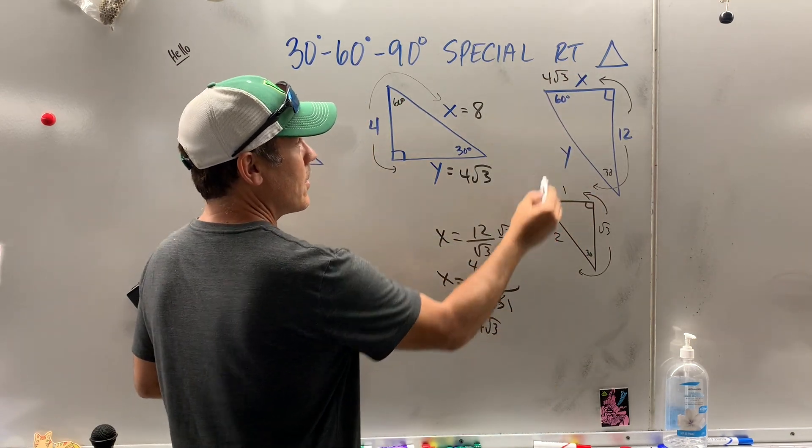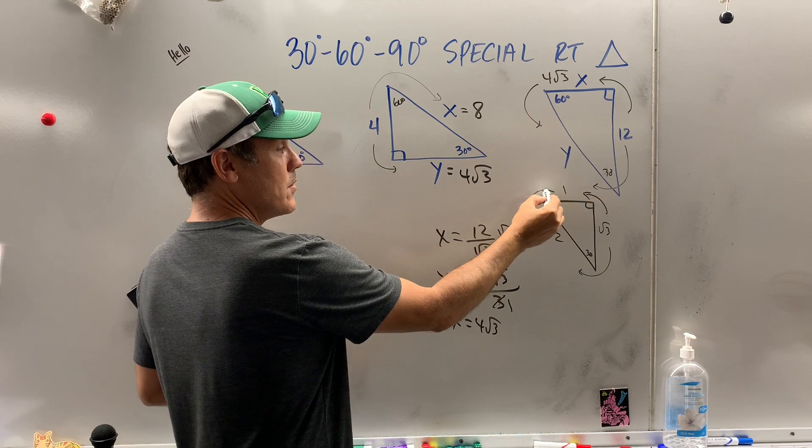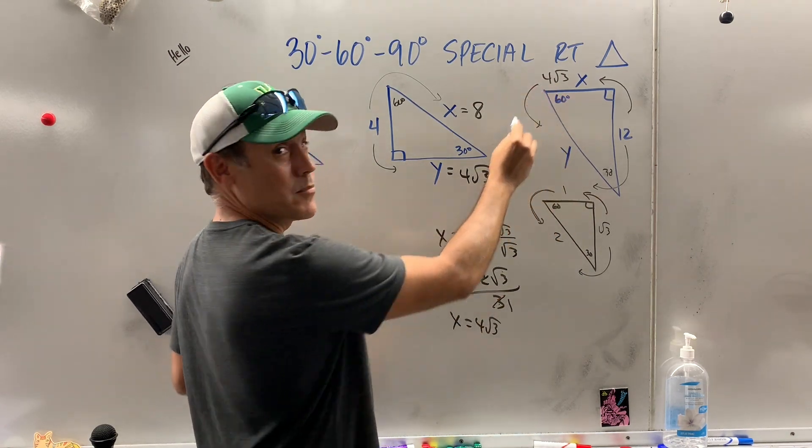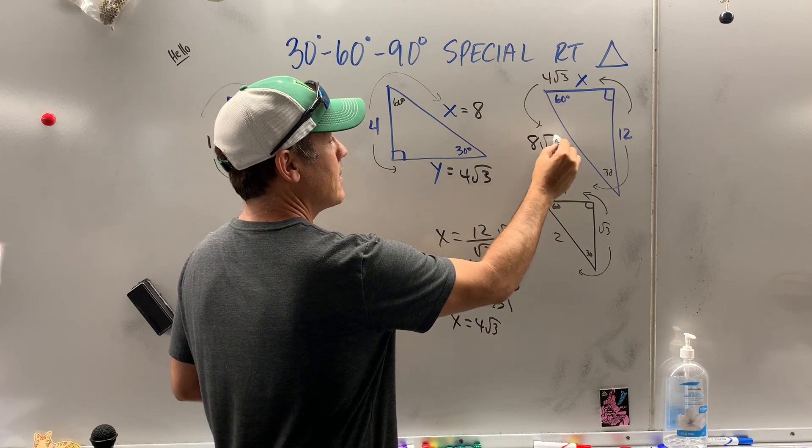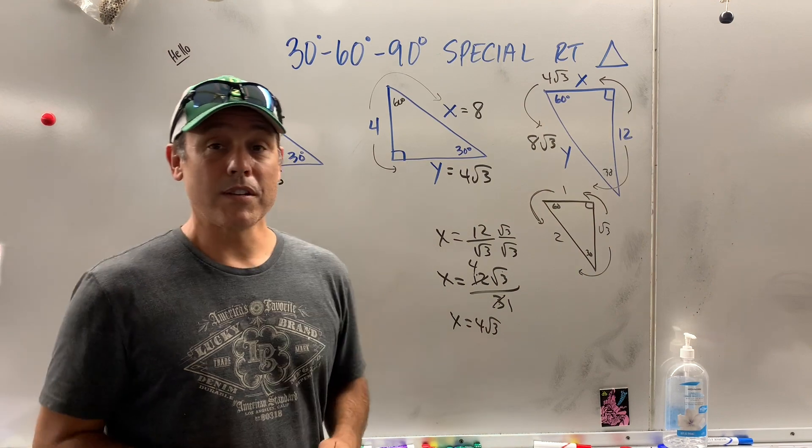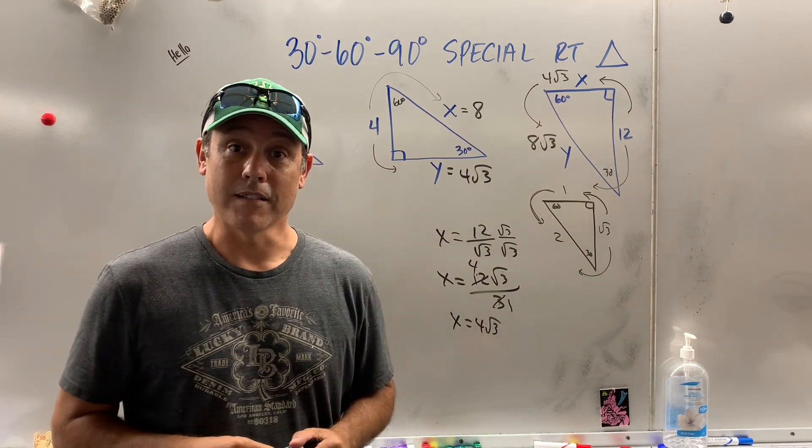4 radical 3. Now, we can go here. All you do is multiply by 2. So, y would be equal to... What is 2 times 4 radical 3? 8 radical 3. And that, my friends, is how you can use the 30, 60, 90 special right triangles.